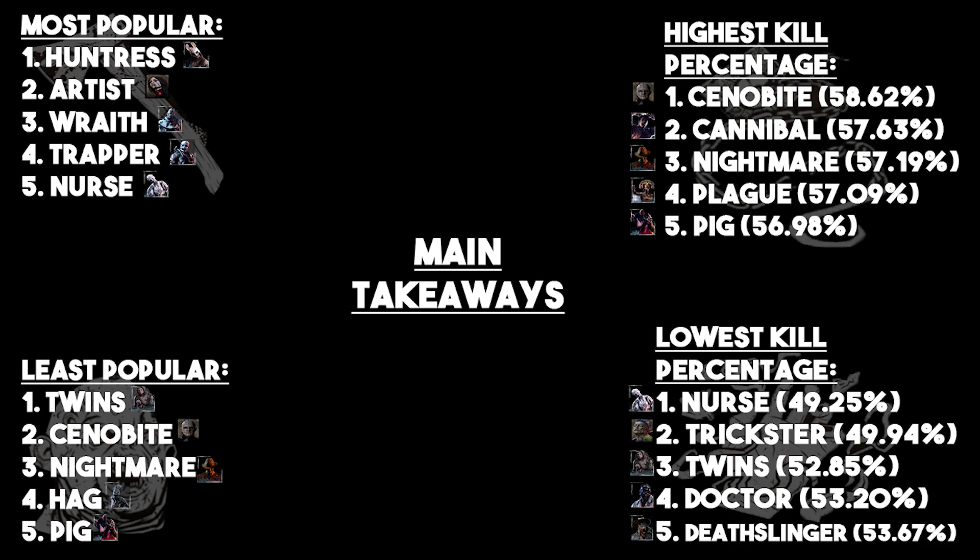Huntress at number one — I'm not surprised she's number one. She is debatably the most fun killer to play, which is a very subjective thing, but beyond that she's also really, really good. You get a killer that's fun to use and also rather effective. Going down to the least popular, Pig is the fifth least popular to play, despite the fact that her mechanics are actually pretty fun. She's just not that effective of a killer overall.